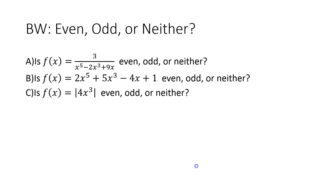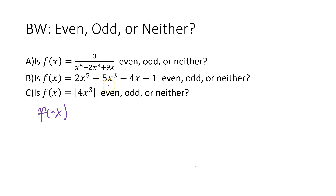Got three bellwork problems here for you — give them a shot. For each one, you're going to plug in f(-x). I encourage you not to graph them, but if you need to, take a look at your calculator and throw them in the graph to check for symmetry. Just plug in f(-x) into each x, put negative x in place of x, and see if you get the opposite of the original function. Give that a shot and come back in a minute or two.